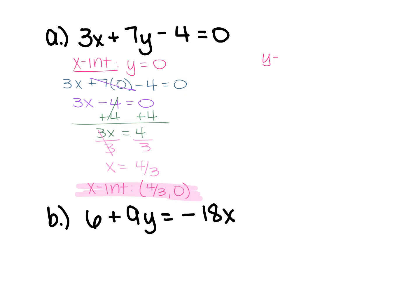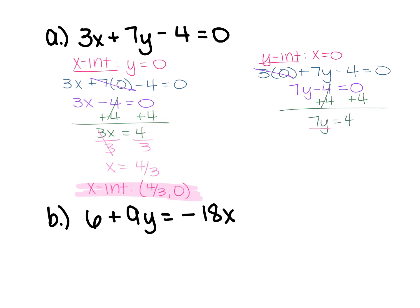Now finding the y-intercept by plugging in 0 for x: 3 times 0 + 7y - 4 = 0. That term cancels, leaving 7y - 4 = 0. Add 4 to both sides giving 7y = 4, then divide by 7 to get y = 4/7. So the y-intercept is the ordered pair (0, 4/7). The rule is: always plug in 0 for the opposite variable — plug 0 in for y to find the x-intercept, and 0 in for x to find the y-intercept.